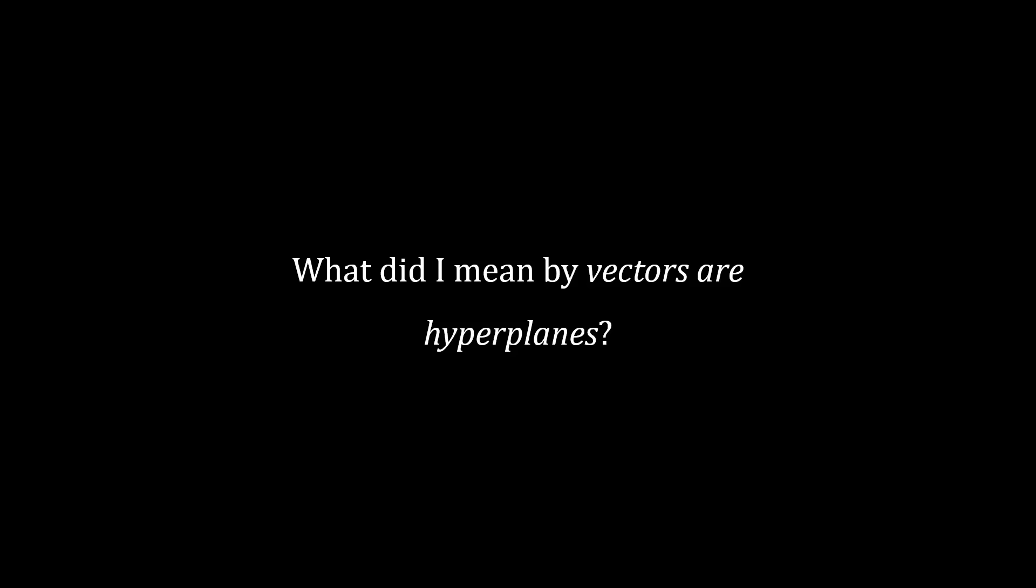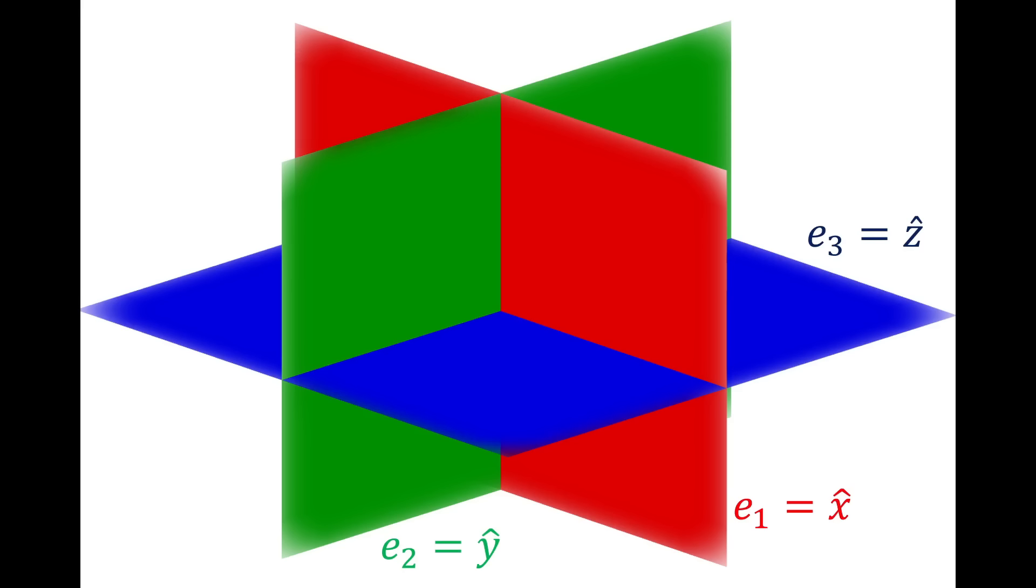But what do vectors have to do with this? The idea is, in principle, very simple. Instead of representing a point or direction, a vector represents an individual hyperplane. In three dimensions, this looks like three orthogonal planes. The red plane is the unit vector in the x-direction, the green plane is for the y-direction, and the blue plane is for the z-direction. I've included the notation of e1, e2, and e3, because that is how basis vectors are traditionally labeled in geometric algebra. For the rest of this video, I will use that notation.